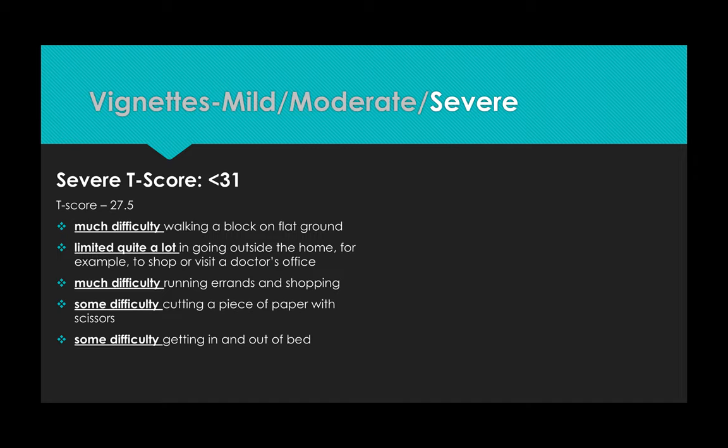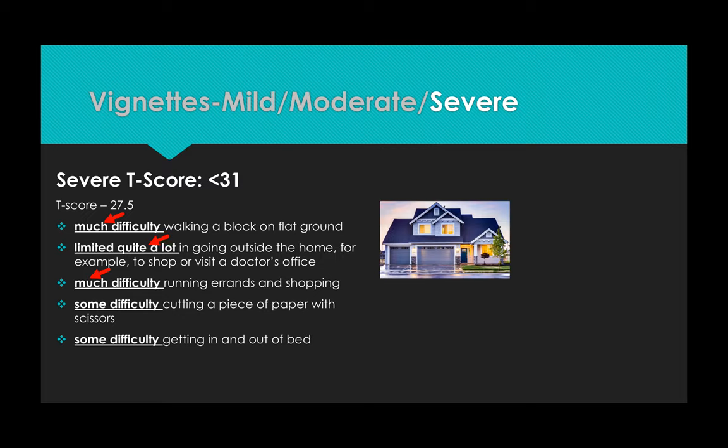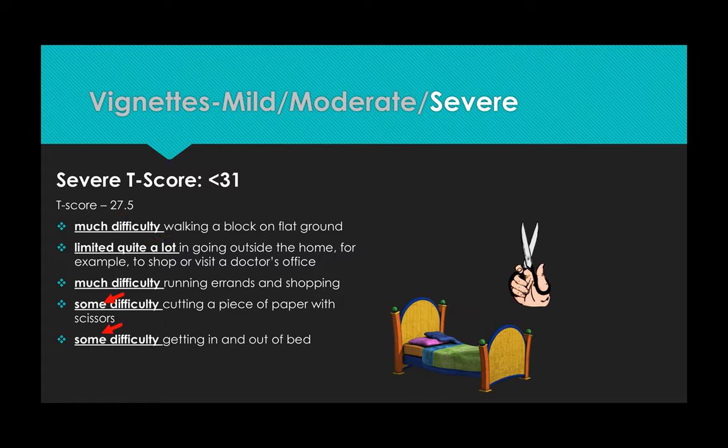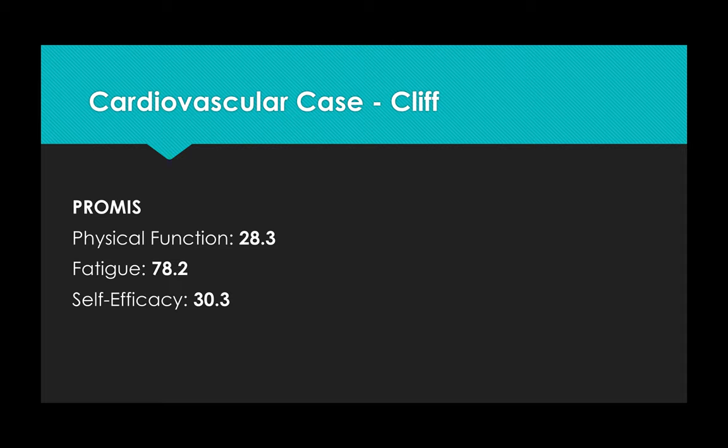Now let's examine a case of severe physical limitations of score of 27.5. These items indicate that the patient has much difficulty or quite a lot with items associated with community ambulation, but only some difficulty with routine tasks like scissors and getting out of bed. So let's look at the PROMIS scores in a patient that had a myocardial infarction with severe physical limitations. Look at these PROMIS scores, all greater than two standard deviations worse than their reference populations. Remember, the perceptions we just reviewed, a score this low means that walking on flat ground for a block, he perceives as much difficult or nearly unable to do.